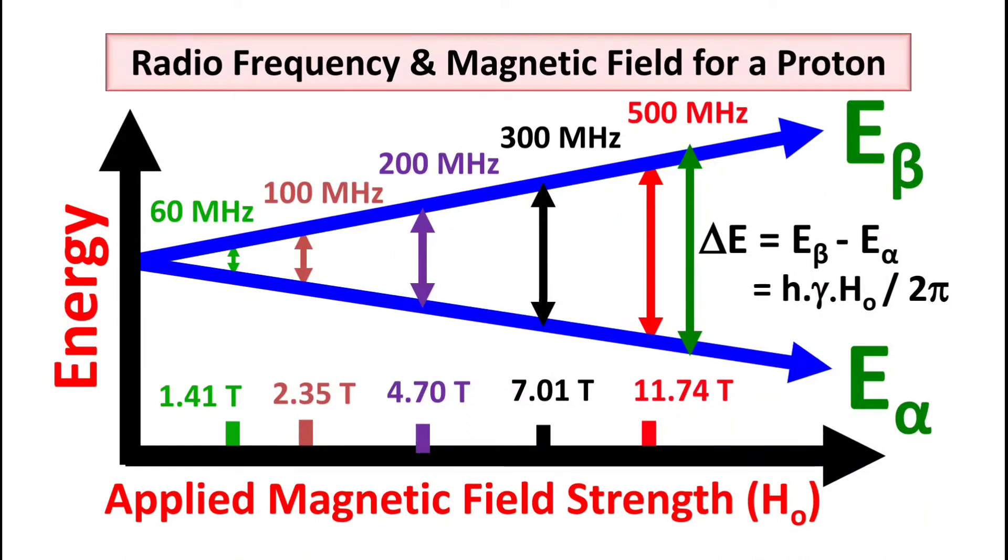These values of radio frequency in megahertz and magnetic field strength in Tesla are actually obtained by using the equation delta E equals E-beta minus E-alpha. Here Planck's constant is constant, the gyromagnetic ratio for proton is also constant, 2π is constant. Only thing changing is the frequency of radio light and the field strength of magnet.